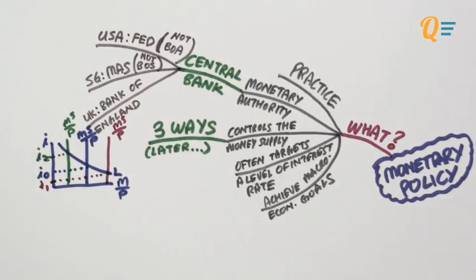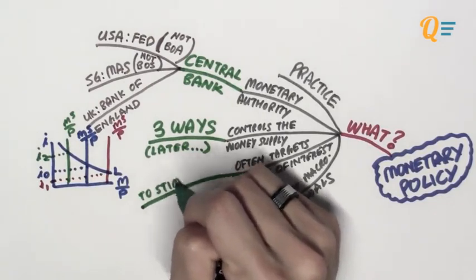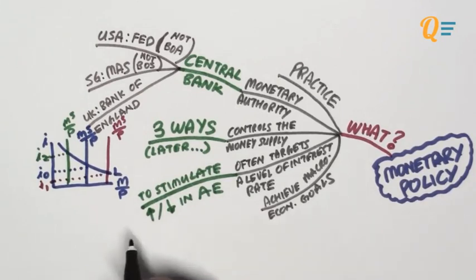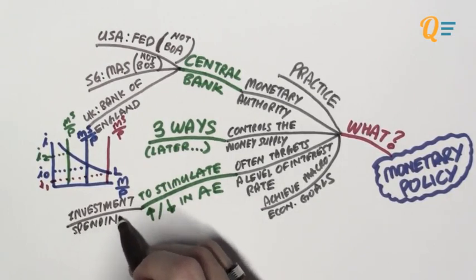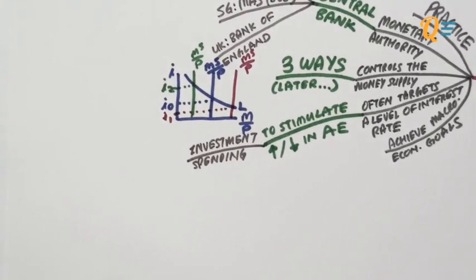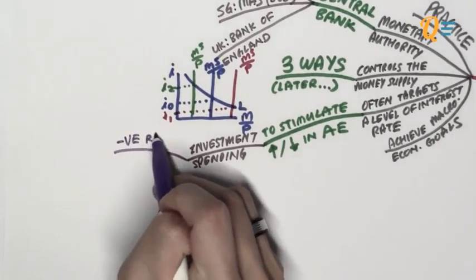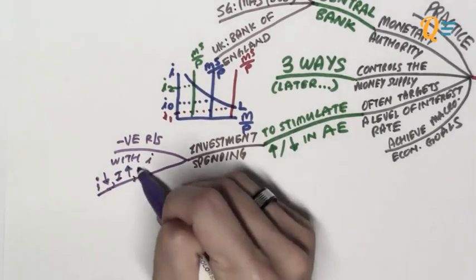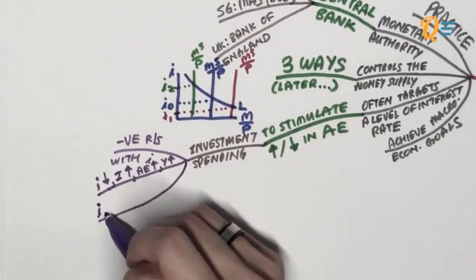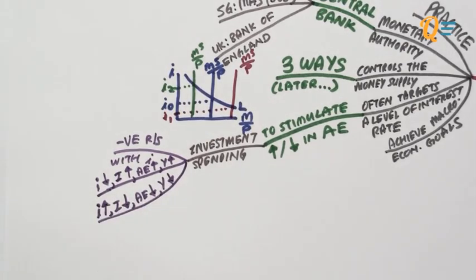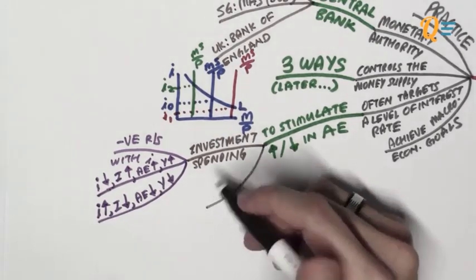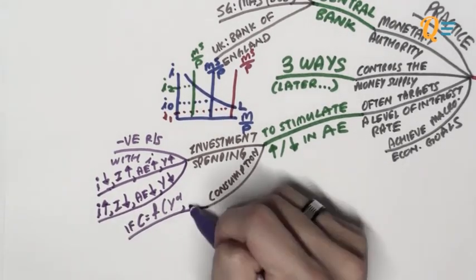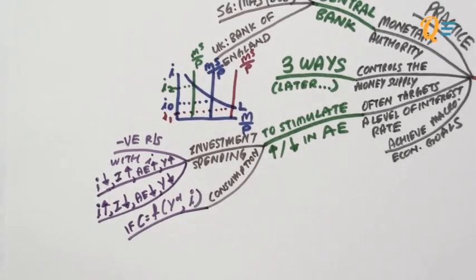That brings us to targeting a level of interest rates. The central bank wants to stimulate either an increase or decrease in aggregate expenditure. Interest rates affect the amount of investment spending in an economy, and investment spending has a negative relationship with interest rates. So if the central bank reduces the interest rate level, this increases investments, hence an increase in AE and output — and vice versa. Consumption can also be stimulated by interest rates when the consumption function depends on both disposable income and interest rates.